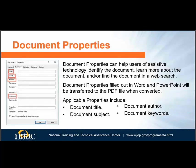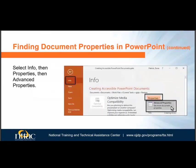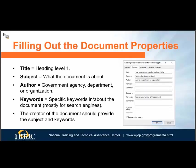Let's now discuss document properties. While not quite as important as most accessibility features, document properties provide information about the document and help users of assistive technology identify and find documents. Select File on the ribbon; the Info view will appear. On the Info tab, select Properties, then Advanced Properties. A dialog box will appear. The title should match the title of the title slide. The subject should briefly describe what the document is about. The author should not be a person's name, but the organization, department, or agency — for instance, OJJDP and not John Doe. Keywords are words someone might use when searching for information your document provides.